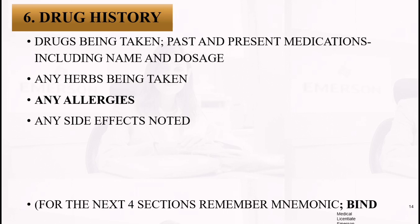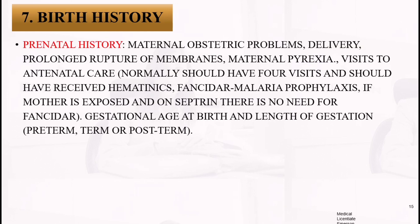The next four sections use the mnemonic BIND: B-I-N-D. B is for Birth history. Ask about any maternal obstetric problems, problems during delivery, whether there was prolonged rupture of membranes, any maternal pyrexia, how many antenatal care visits were made, and whether FANC — focused antenatal care — was given. You also need to know when to give Fansidar and the like.